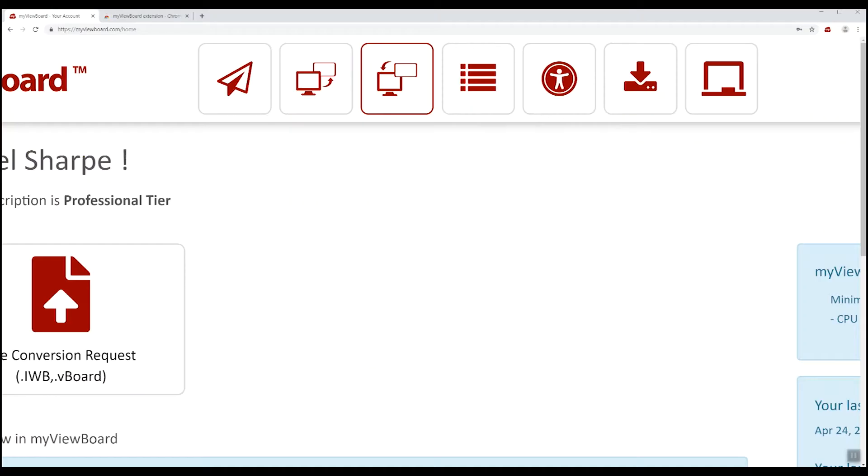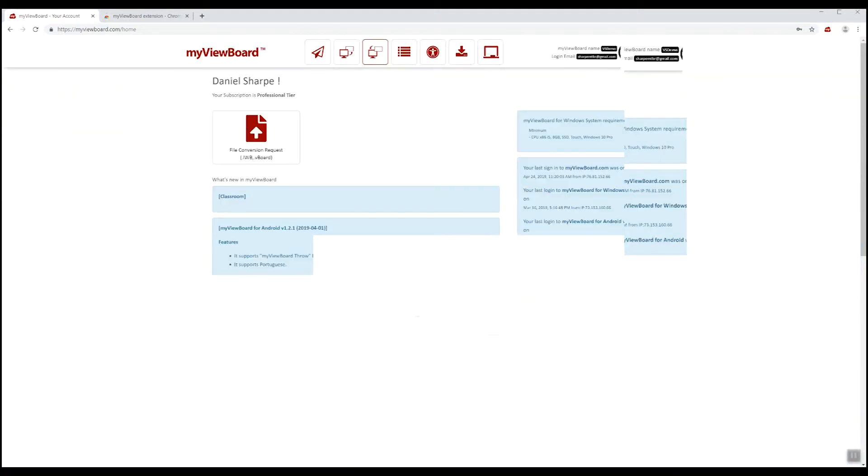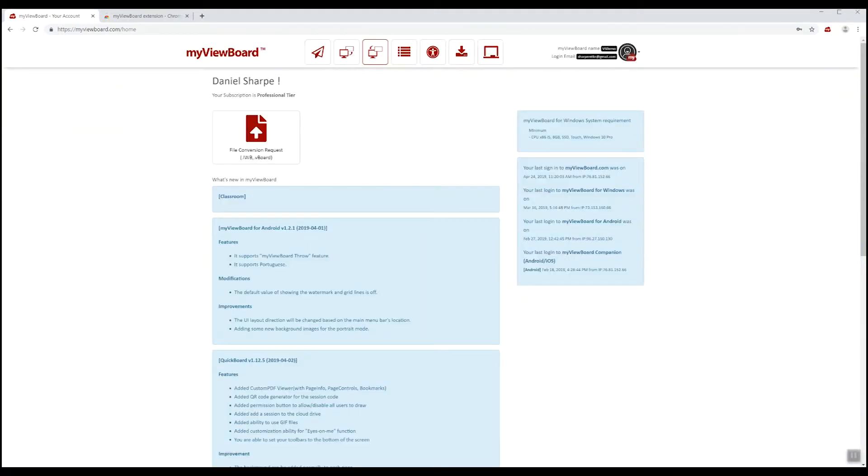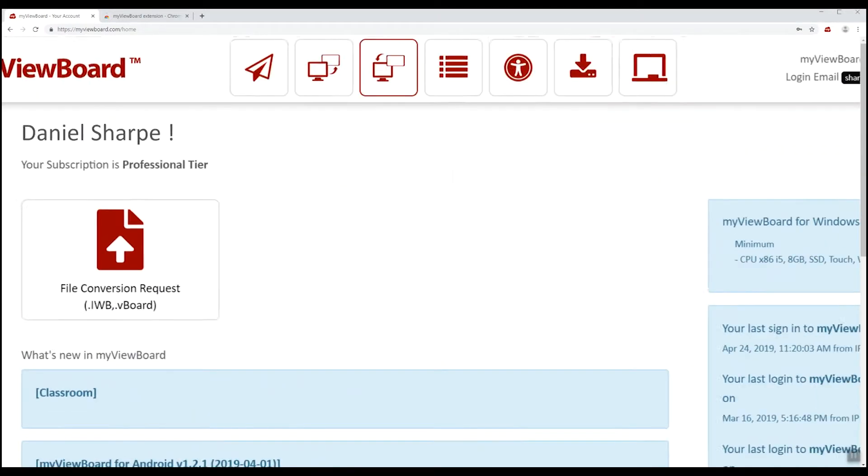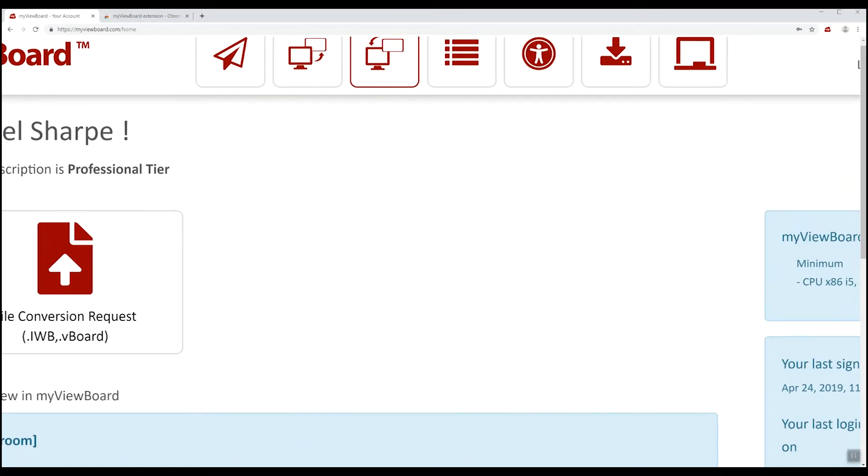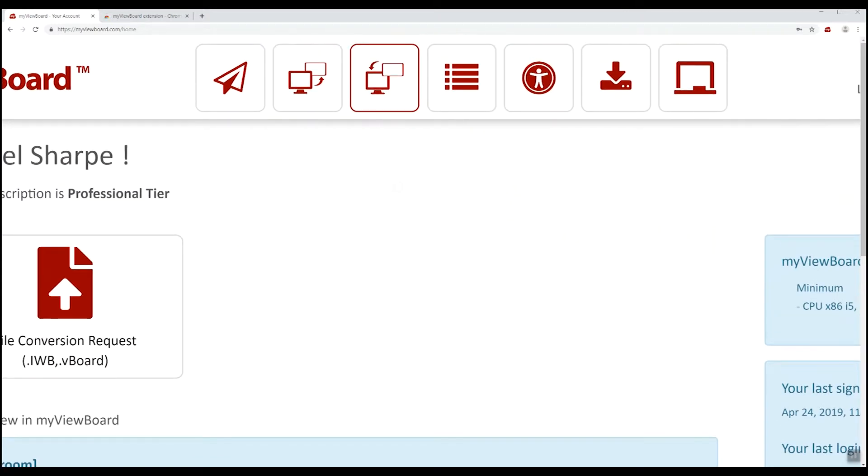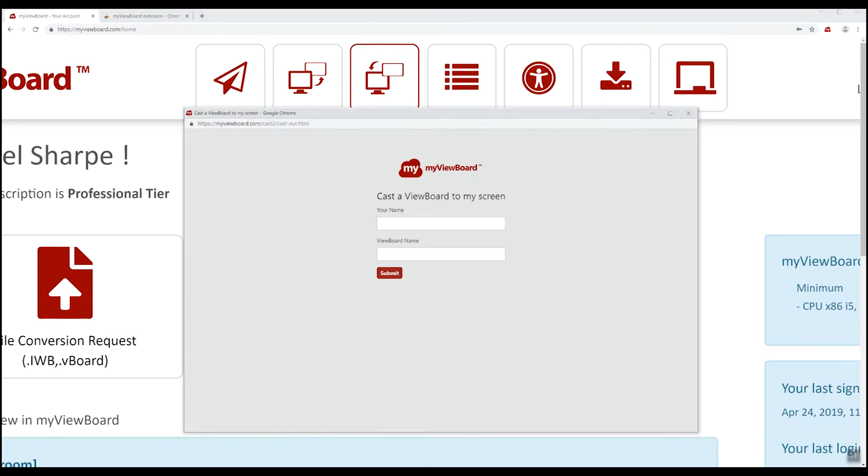What they need to do is go to MyViewBoard.com, and you have to be signed in with a MyViewBoard.com account. At the very top, you'll see this icon here in the middle, which is an image of a screen being pushed to another device. When I touch that, it opens a window that says cast a viewboard to my screen.